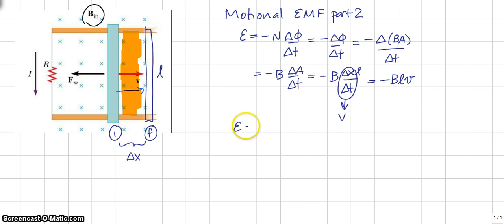And we said the current could be found using Ohm's Law. And the current is BLV over R.